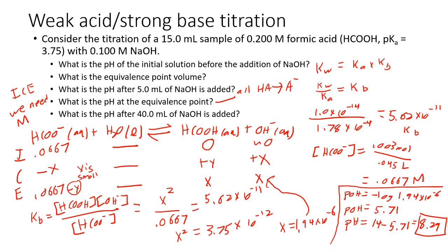That completes part D. It takes a little more work, but it's actually really similar to the initial weak acid calculation — just with a base instead, and you have to do a little extra work to calculate the molarity. In a weak acid strong base titration, at the equivalence point you'll always only have one compound present: a weak base, because all the acid was neutralized. If it had been a weak base titration, you'd have a weak acid left and would need to find Ka.